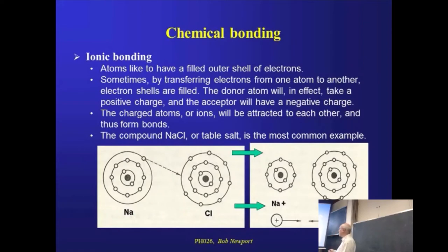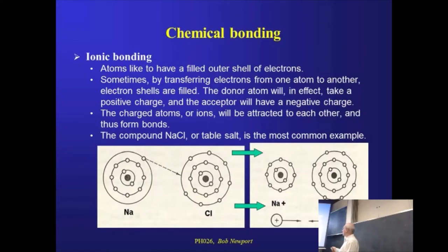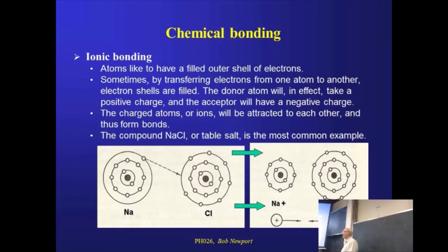If you remember from our simple model of the atom, each shell has a maximum number of electrons it can pack in, and we minimise energy when the outermost shell is at that maximum — two for S, six for P, and so on. We can achieve that for sodium and chlorine by switching one electron. The sodium now looks like it has a full outer shell and becomes a sodium-plus ion, and the chlorine-minus ion now has a full outer shell with eight electrons — two plus six.